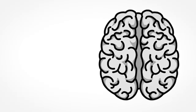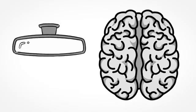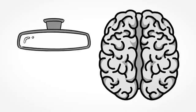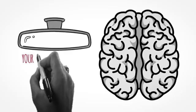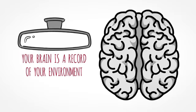So your brain, according to neuroscience, is organized to reflect everything you know in your life. Your brain is a record of your environment. It's a record, an artifact of your past.